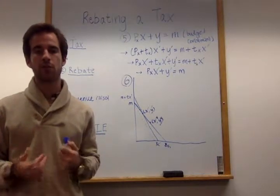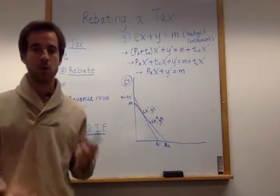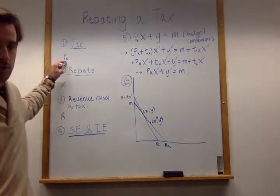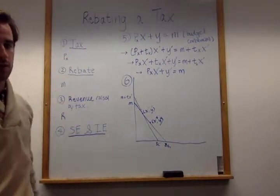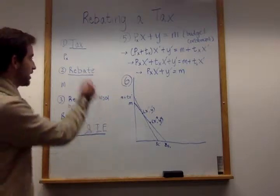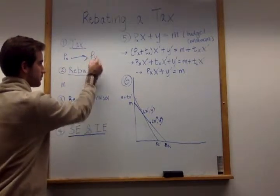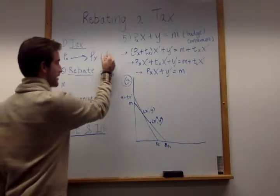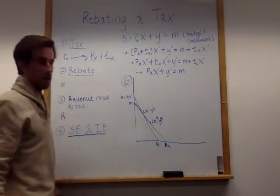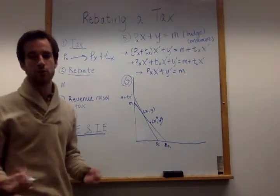In this plan, first the government taxes a specific good. We're going to denote that good by PX, the original price of good X. It's going to change after the tax to the price of good X, which is PX plus the tax of that good subject to the amount of the good that you consume.